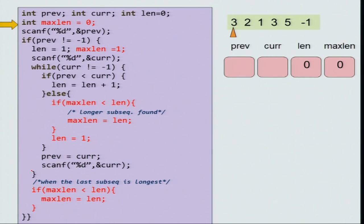So, I have picked a particular input 3 2 1 3 5 minus 1 and you will see that the longest increasing sequences are 3. So, the increasing sequences are 3 then 2 then 1 3 5. So, 1 3 5 is going to be the longest increasing subsequence and let us see how our program will find that out.